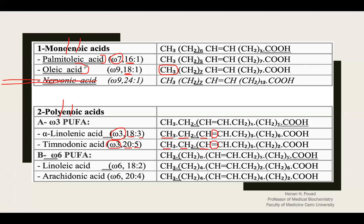Today or tomorrow, please study oleic and palmitoleic. Oleic is omega-9, palmitoleic is omega-7. Omega means the double bond is between carbon number 9 and 10 for oleic, and between carbon number 7 and 8 for palmitoleic. Oleic has 18 carbons, palmitoleic has 16 carbons. 'Mono' means one double bond; 'poly' means more than one double bond.